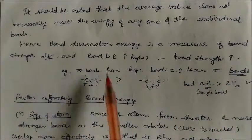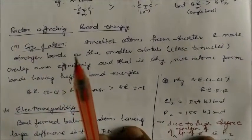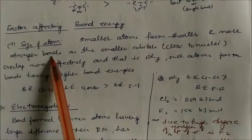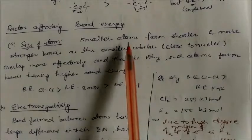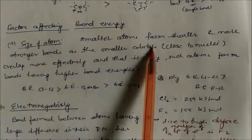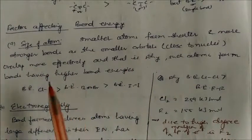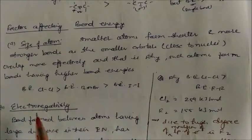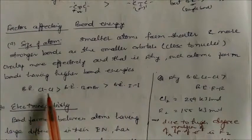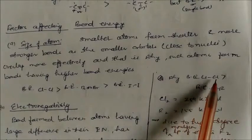A single pi bond is always weaker than a sigma bond, but combined multiple bonds give more energy overall. Factors affecting bond energy include: (1) Multiple bonds — more bonds means higher bond energy. (2) Size of atom — atoms with smaller size form shorter, stronger bonds because their smaller orbitals are very close to the nucleus, overlapping more effectively. For example, for Cl, Br, and I, Cl has the smallest size and highest bond enthalpy.